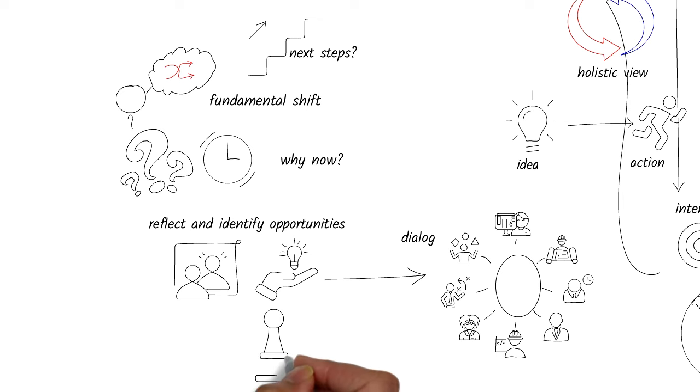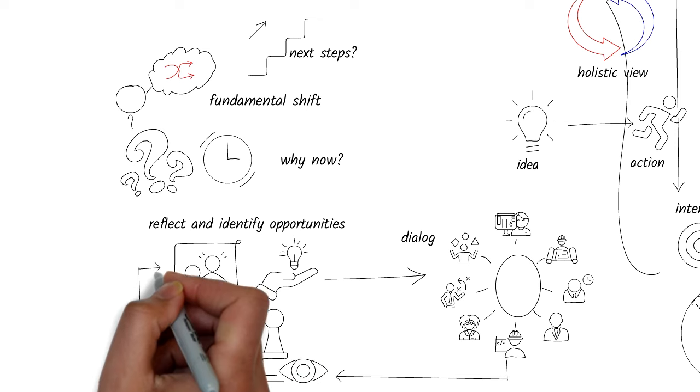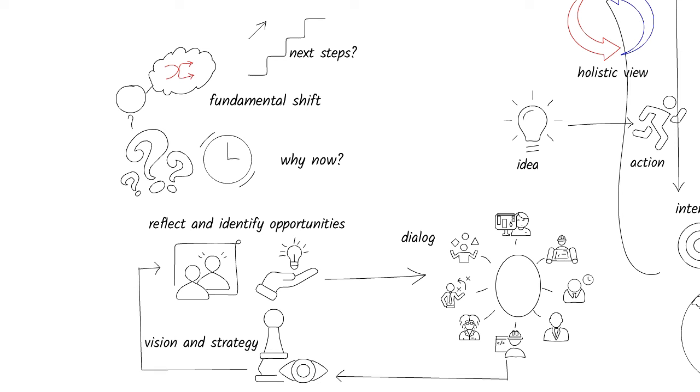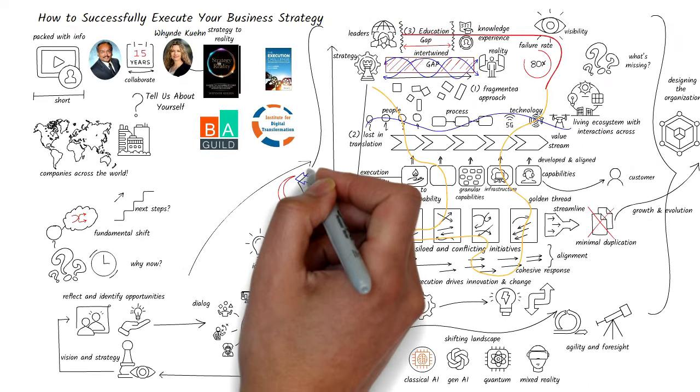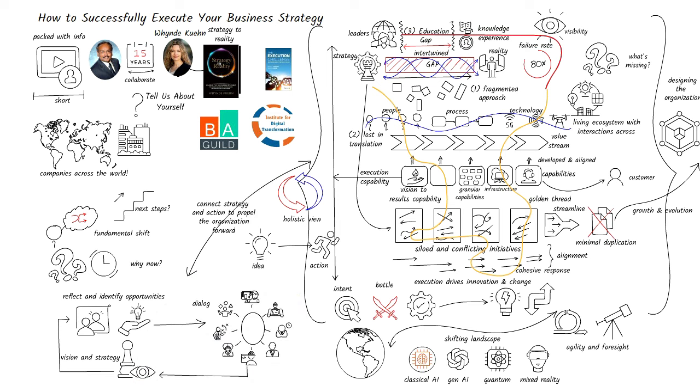As you build understanding and buy-in, then focus on vision creation. Define an end-to-end strategy to execution process that encapsulates the enterprise view and find opportunities to put those ideas into action. By rethinking the way we convert strategic plans into actions, we can not only achieve our goals more efficiently, but also foster a culture of agility and innovation that propels our organizations into a successful future.